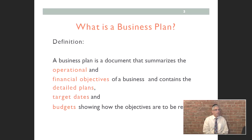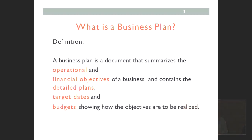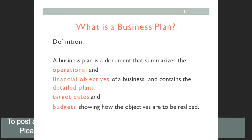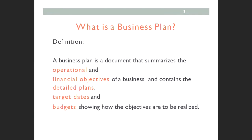Moving on to the first part: what is a business plan? A business plan is a document that summarizes the operational and financial objectives of a business and contains the detailed plans, target dates, and budgets showing how the objectives are to be realized. Most business plans are written before a business becomes operational, so it's important to convince yourself and the reviewer that you have the capability to make this a profitable and successful business — both operationally and financially. The business plan should cross every T and dot every I in terms of operations.